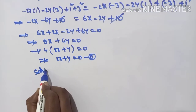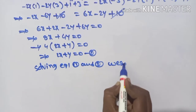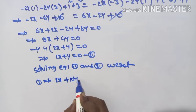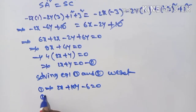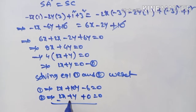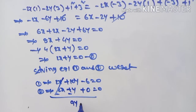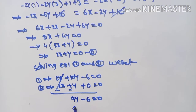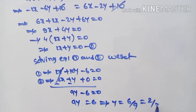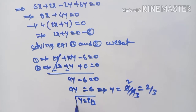Solving equation 1 and equation 2: equation 1 is 2x + 10y - 6 = 0, equation 2 is 2x + y = 0. Subtracting equation 2 from equation 1, the 2x terms cancel, giving 9y - 6 = 0, so 9y = 6, which implies y = 6/9 = 2/3.